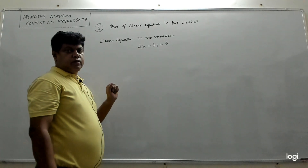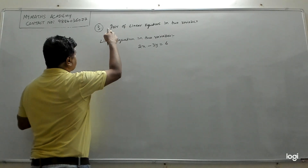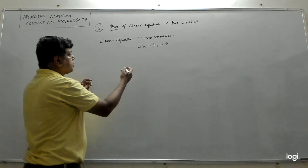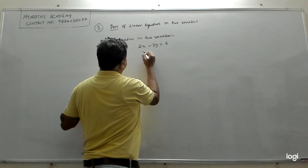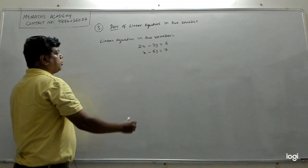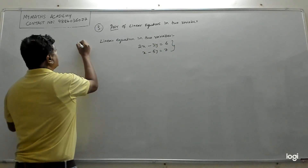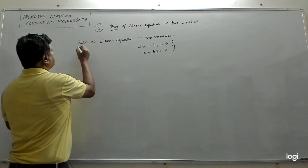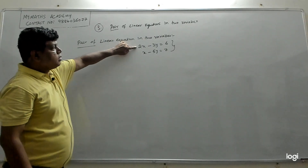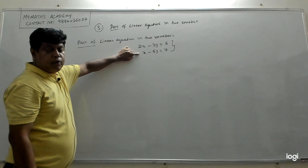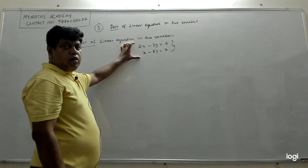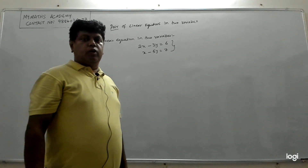Now, a 'pair' of linear equations means if I add one more equation. For example, if I also have x minus 5y equal to 7, then together these two equations are called a pair of linear equations in two variables, because you have a pair with the same two variables x and y.